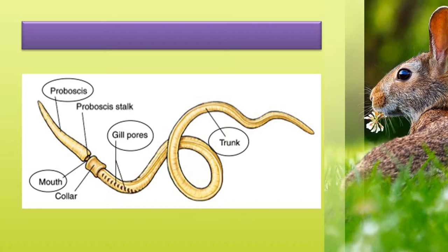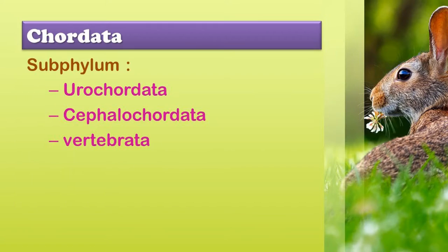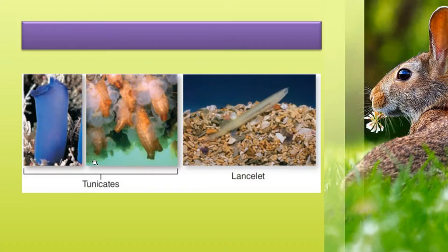Tricardiero flava is the Indian hemichordate found in Krusadai Island in Tamil Nadu. Phylum Chordata is again divided into three subphyla: Urochordata, Cephalochordata, and Vertebrata. Chordata is the largest phylum, with the most familiar group of animals such as amphibians, reptiles, and birds, as well as uncommon forms like lancet or Amphioxus, and tunicates which are ascidians.